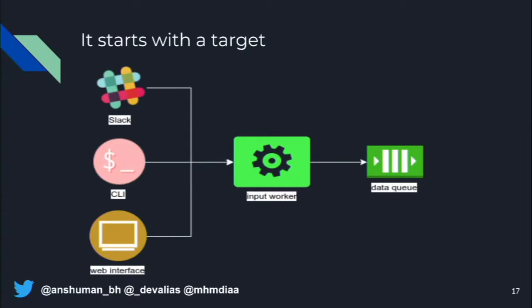It starts with what we want to hack — whether it's an IP address, subdomain, domain, or organization. You start with that, and that value gets fed into an input worker, which then drops that value into a queue. The idea is a very asynchronous, microservice-based architecture that is horizontally and vertically scalable, and can run against not just one domain, but multiple domains per second.